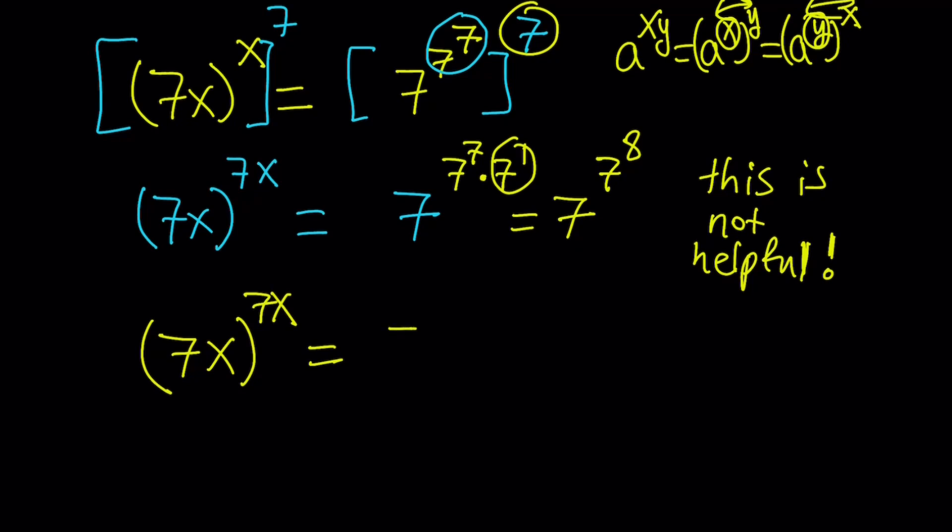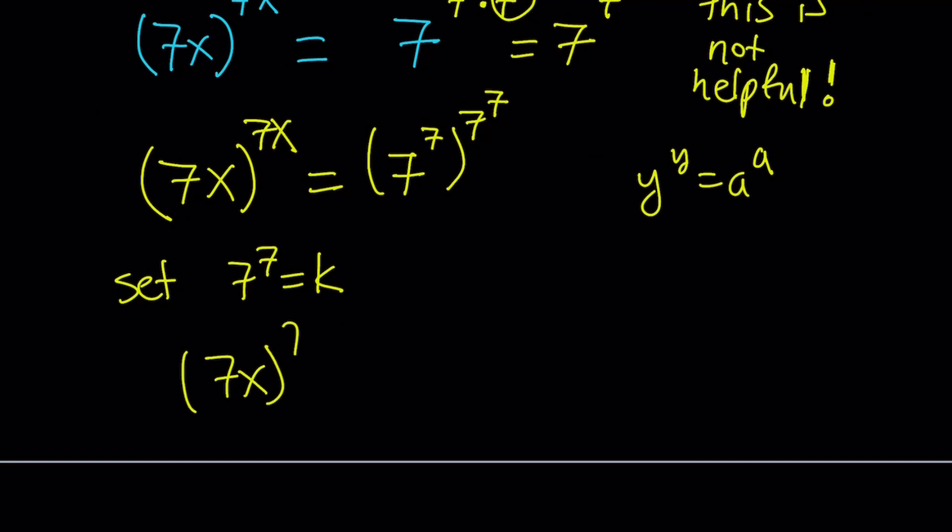So we're going to do this. We're going to write this as 7 to the power 7 to the power 7. So it's like 7 to the 7 to the 7 to the 7th, but with parentheses, right? And now, this is nice, because we got something like y to the y equals a to the a. Do you see what I see? So here's what we're going to do. Let's set 7 to the 7th equal to k. And this is going to give us 7x to the power 7x equals k to the power k. And that's kind of nice, because this basically implies that 7x equals k.